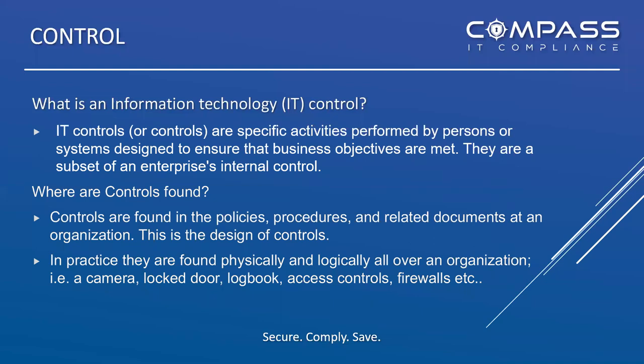For example, a physical control restricting unauthorized access to a building might be a door lock. In your policy it might say: 'The facilities manager will ensure that all doors to the facility will be locked after hours.' That is a complete control statement — I know who owns it, the facilities manager, and I know what's being done. That's a well-written control: I can audit it, I know what's supposed to be done, and if it's not done I can prove it.